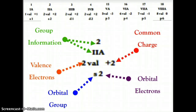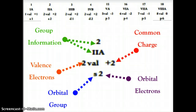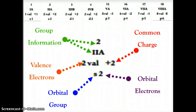The last row at the bottom tells you the orbital group, also called the block of the periodic table. In this example we have an S block — there is also a P, a D, and an F block — and it shows the number of electrons in that orbital. For this example, it is an S orbital with two electrons. This information holds true for the entire column, so all elements in that column share these similar characteristics and properties.